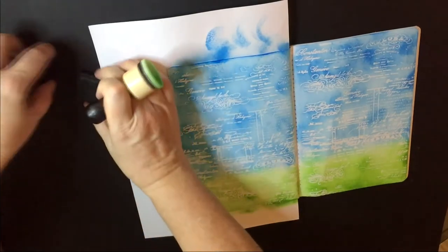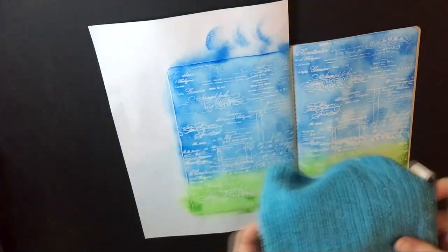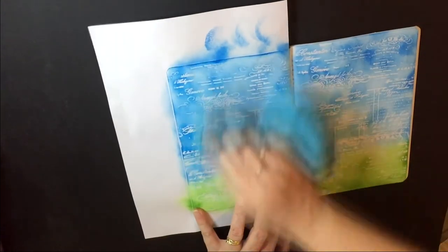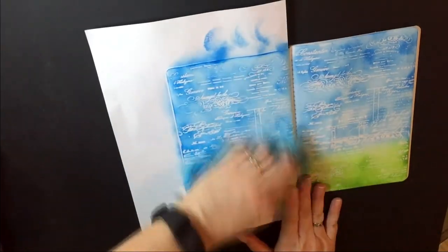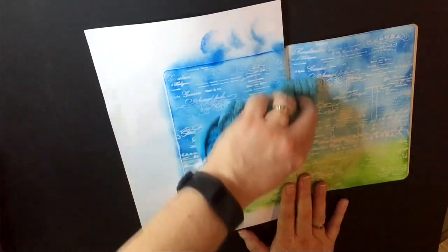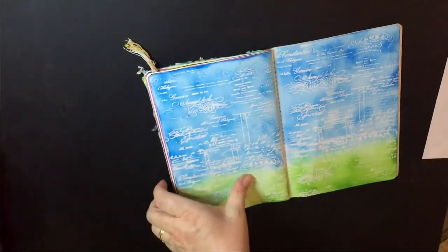Now once I've done that, I get a microcloth and just wipe all over this. What that does is get any excess distress ink off. Then I'm going to heat set this, just for a second.